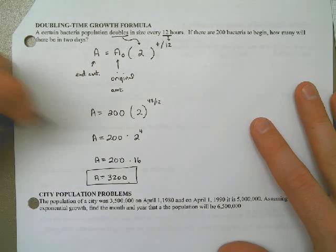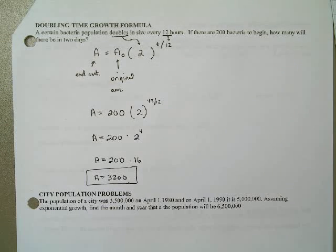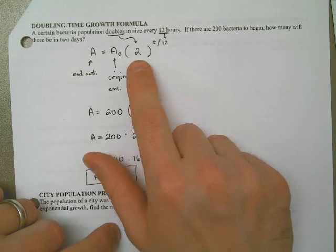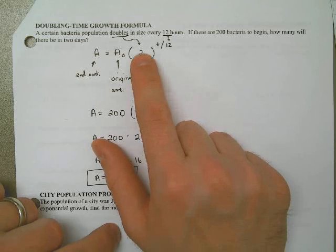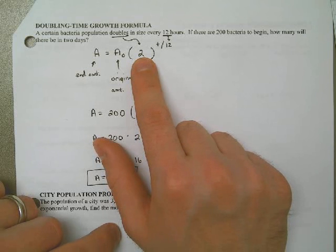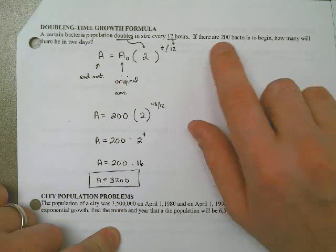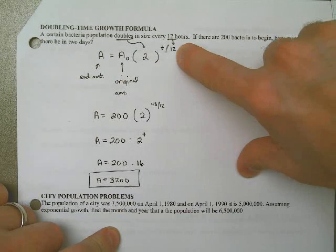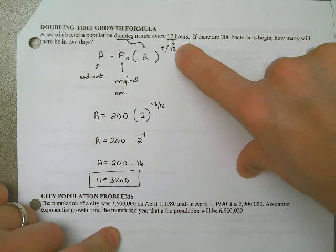So that's how you do a typical problem. Changes that we might make: If this says it triples every 12 hours, we'd use a 3. If it says it quadruples every 12 hours, we'd use a 4. If it says it doubled in size every 8 hours, we would use the number 8 here. If it said it doubled every 6 hours, we would say that. If it said it doubled every day,